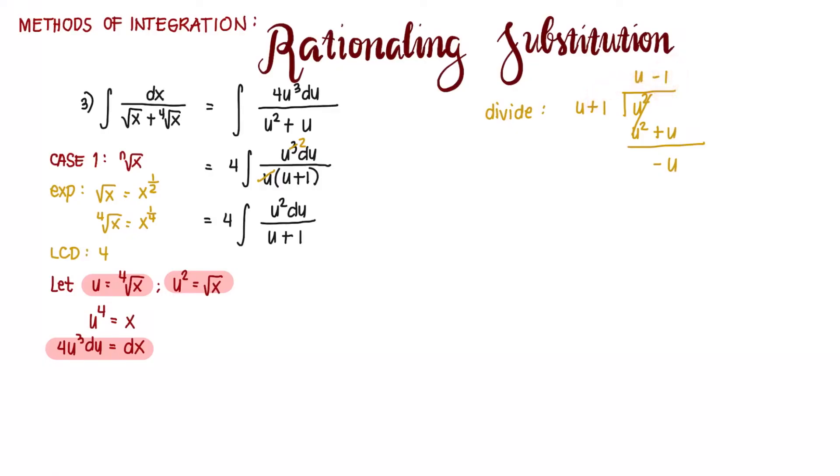Multiplying, negative 1 times u is negative u. And negative 1 times positive 1 is negative 1. We subtract. This becomes cancelled. We have an imaginary 0 here minus negative 1. That becomes positive 1. Therefore, we have a remainder 1.